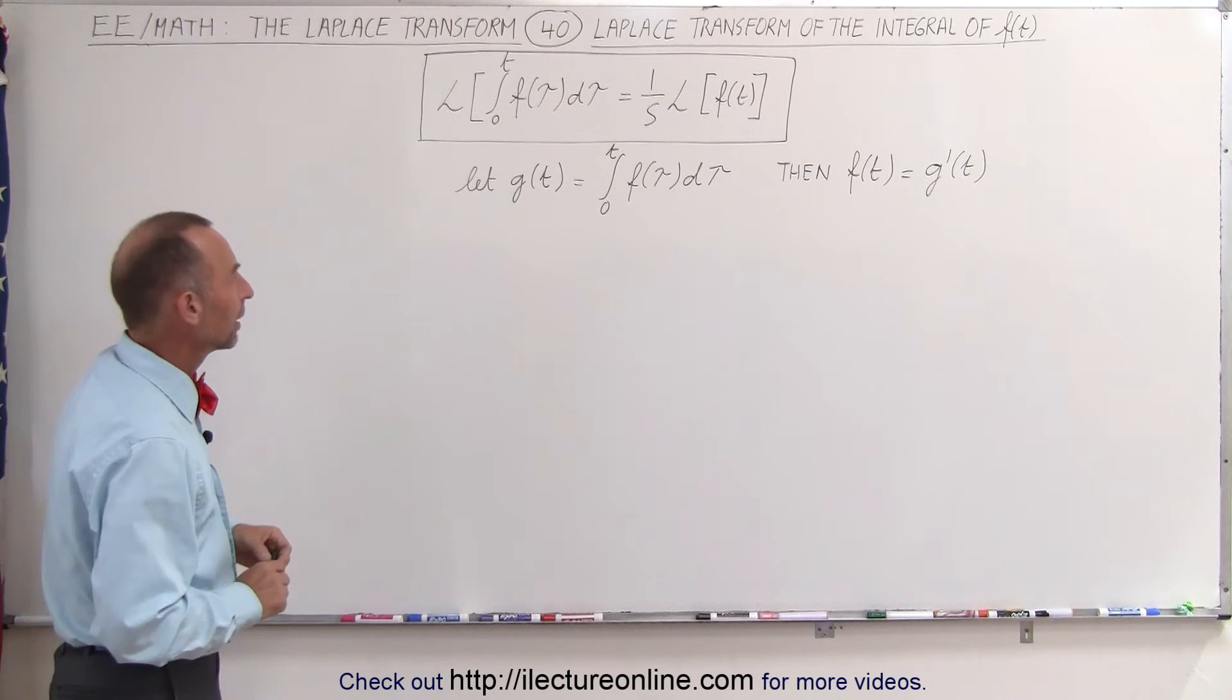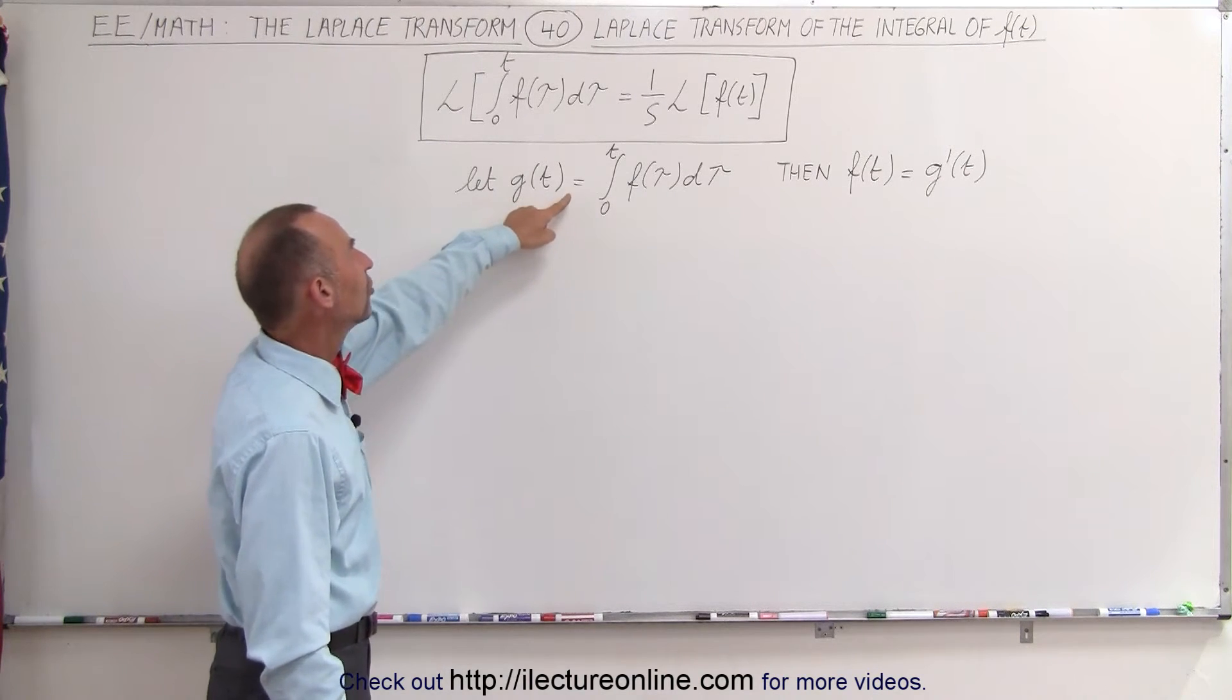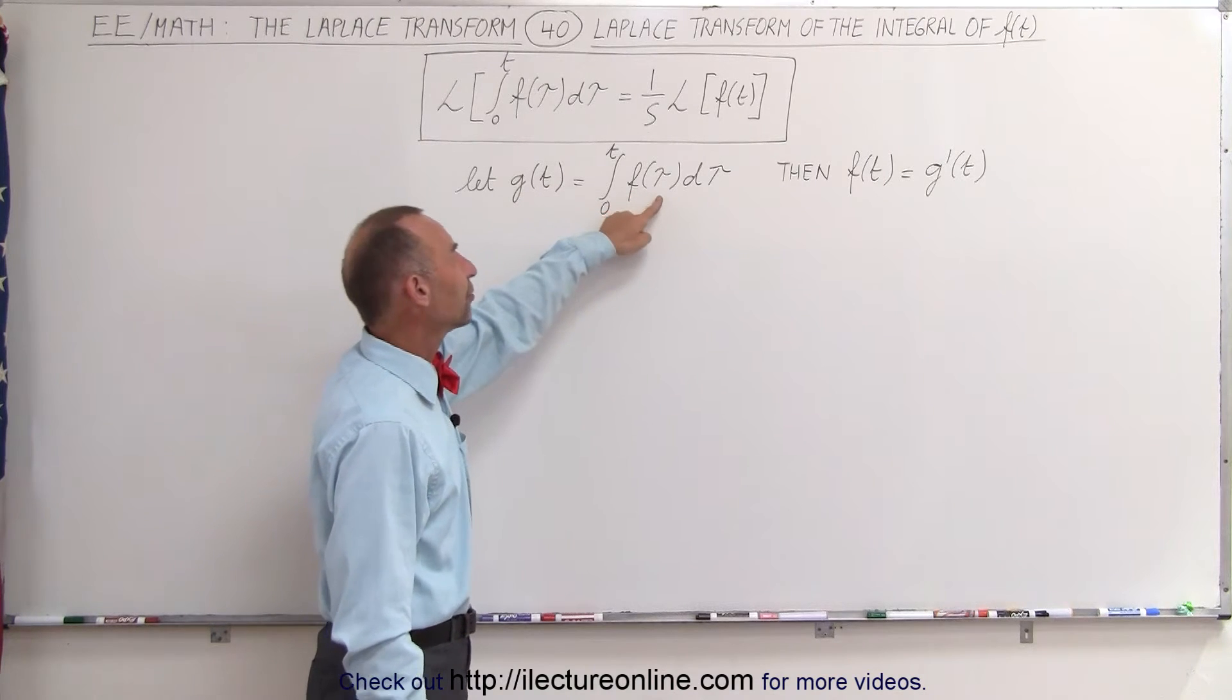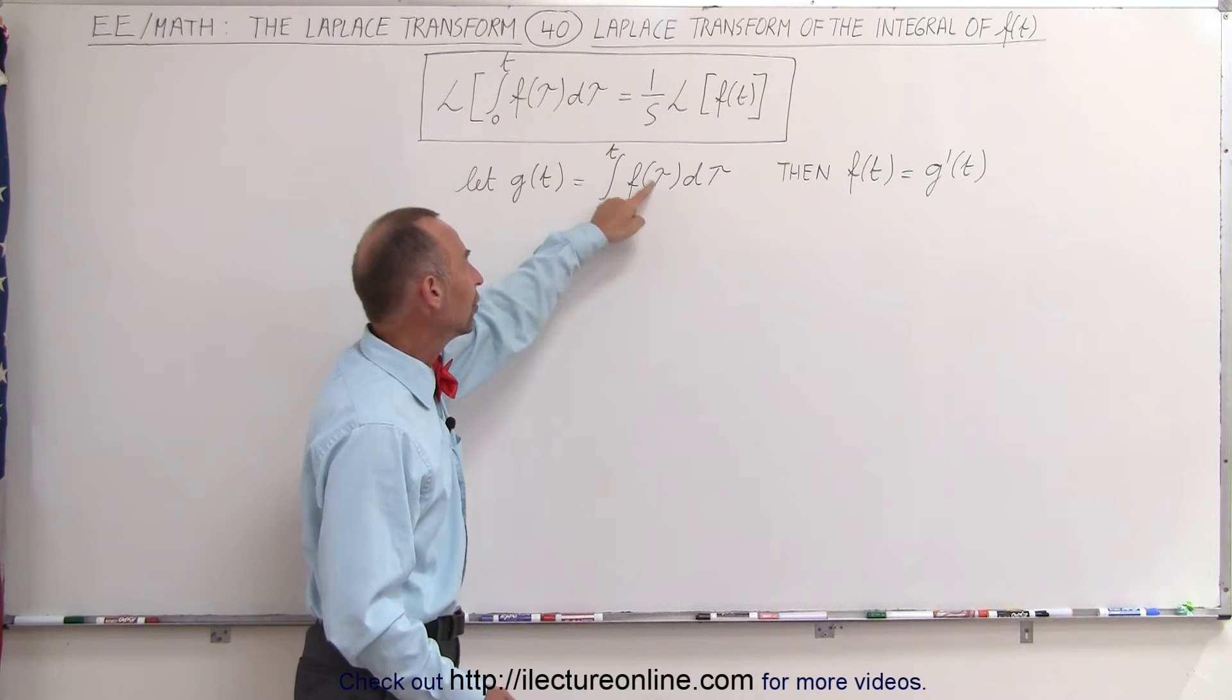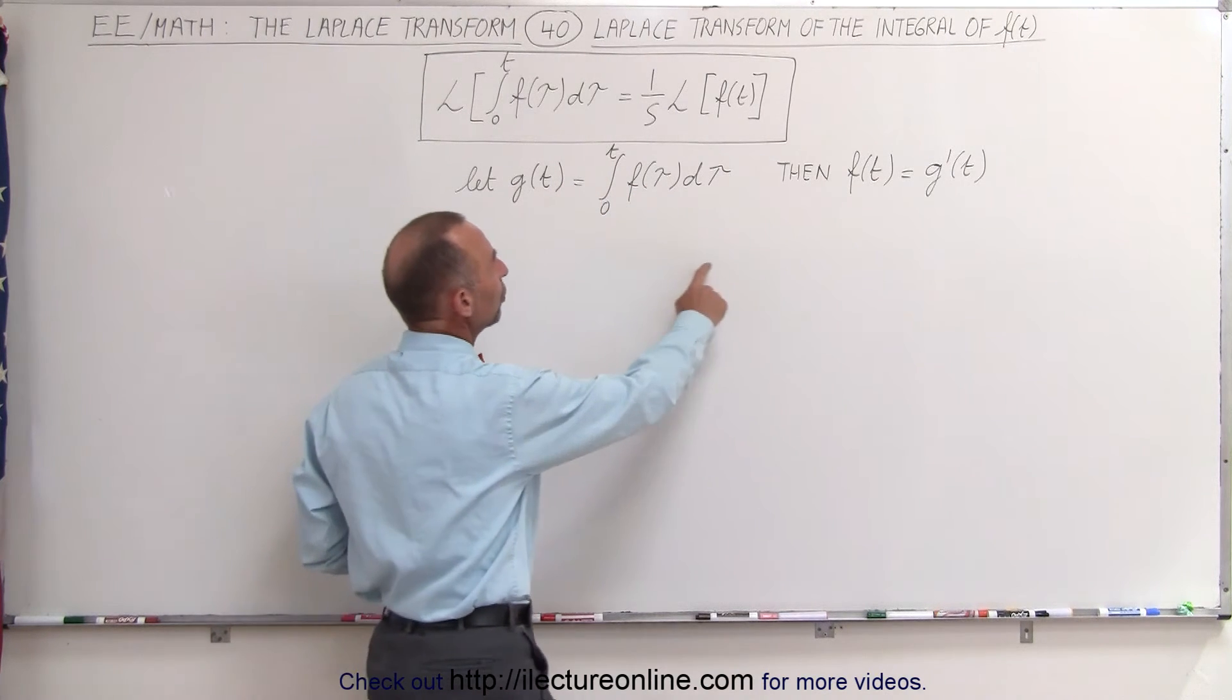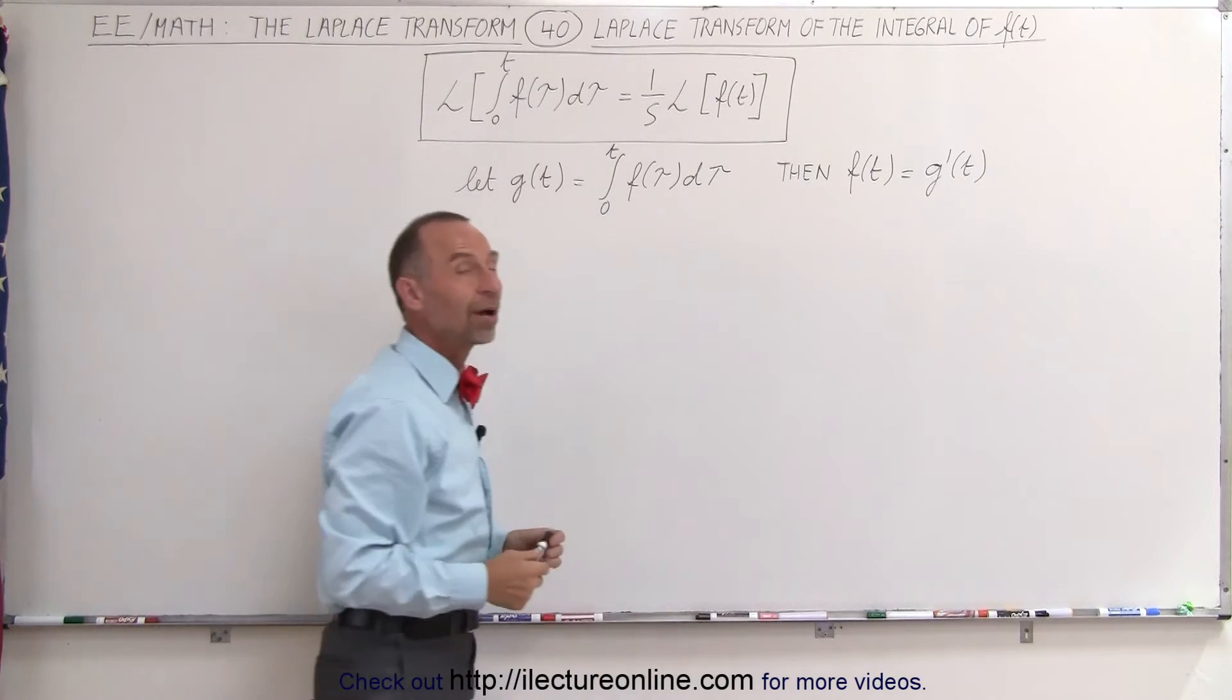Let's try to prove that. We start by saying we have a function g(t) which equals the integral of f(t). I'm using a dummy variable tau so we don't confuse t and tau. If this is true, then f(t) equals g'(t).